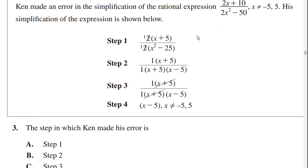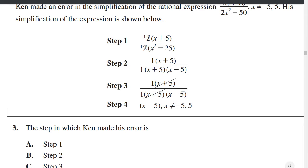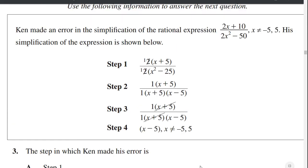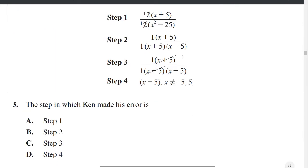Ken made an error in the simplification of the rational expression 2x plus 10 divided by 2x squared minus 50, where x is not equal to negative 5 or 5. His simplification is shown below. First he factored out the 2 in the numerator and the 2 in the denominator and canceled them — that's fine. Then he factored x squared minus 25 as (x plus 5)(x minus 5) — that's good. In Step 3, he canceled out (x plus 5) and (x plus 5). In Step 4 he concluded this was all equal to x minus 5.